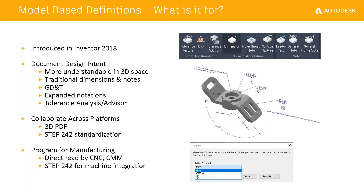It makes things much more understandable because you're looking at it in 3D space. You have access to traditional dimensions and notes, GD&T, and expanded notations. You also have a tolerance advisor and tolerance analysis that can be run in the 3D model. You can collaborate across different platforms — you're not confined to just doing this in Inventor, because we can export to 3D PDF or to a STEP 242 format.